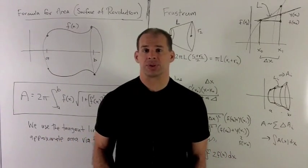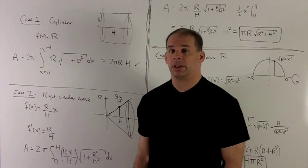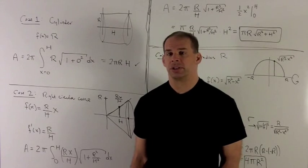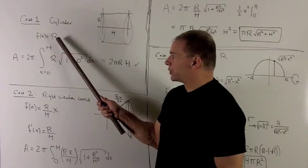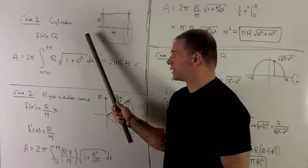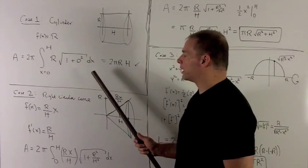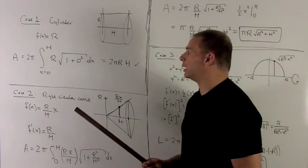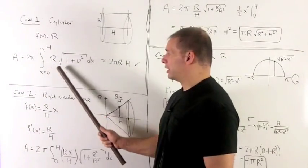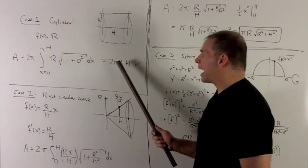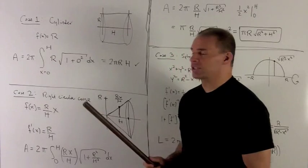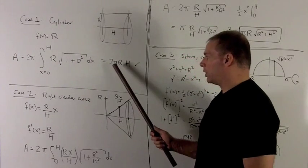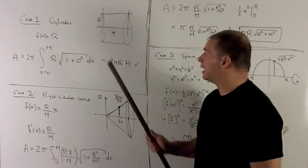Now let's apply the formula to three cases. For the first case, consider a cylinder of radius r and height h. Here f(x) = r, a constant, so f′(x) = 0. The radical of 1 plus 0 squared is just 1. Putting things into the area formula: everything is constant, so it pulls out to give 2πr times the integral from 0 to h of dx. That integral equals h, giving us 2πrh — the lateral surface area of a cylinder.